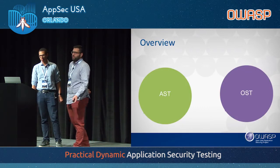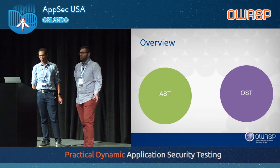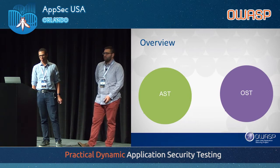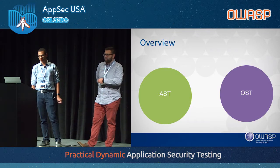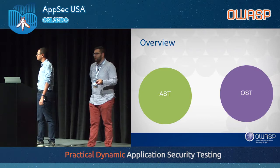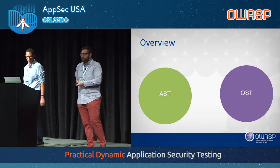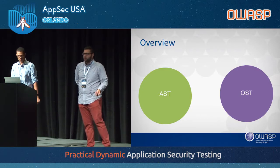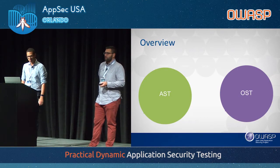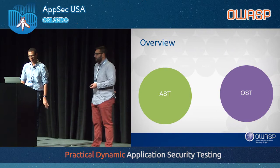We're going to talk about two terms today: AST, application security testing, and OST, operational security testing. We'll get into how they are different and complement each other, and the two solutions we'll present today.